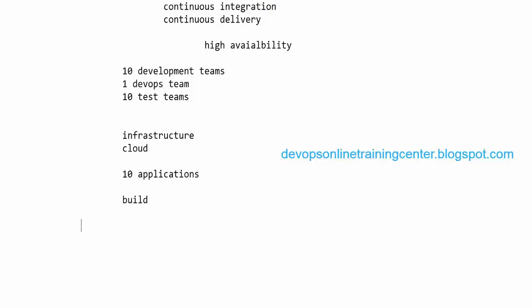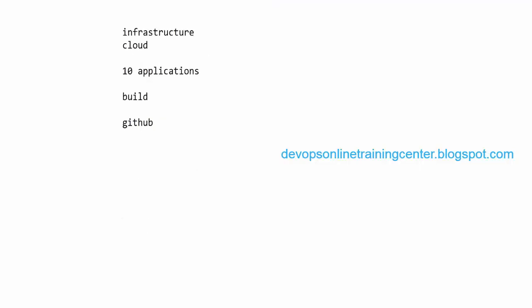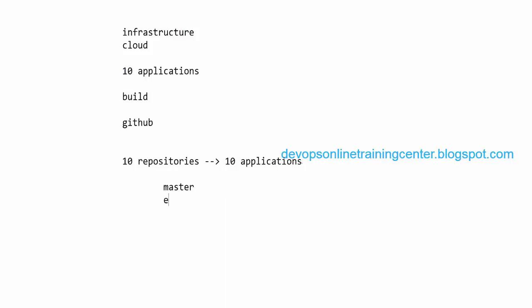Source code is available in GitHub. As a DevOps engineer, I define the process: I create repositories in GitHub — one repository per team, so 10 repositories for 10 applications. Each repository has different branches: a master branch, a develop branch, and a feature branch. This is exactly what to explain in an interview when asked how you implemented DevOps best practices.